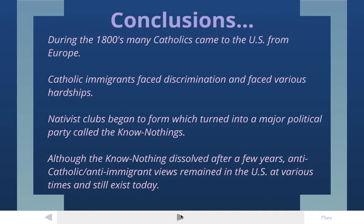To conclude: during the 1800s, many Catholic immigrants came to the U.S. from Europe for various reasons, mostly Irish and German. These new Catholic immigrants faced discrimination — not being hired for jobs, being forced into dangerous work, not being allowed to vote, and other things. There were also nativist clubs that formed and eventually became a major political party called the Know Nothings. The Know Nothing Party only lasted a couple of years, but the anti-Catholic and anti-immigrant views remained. Throughout our history, there have been times when the U.S. was very accepting of immigrants, and other times — like the 1850s — when it was not accepting at all. Some of these views still exist today.